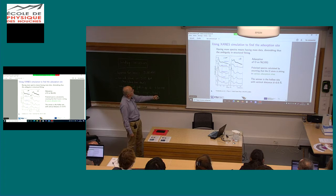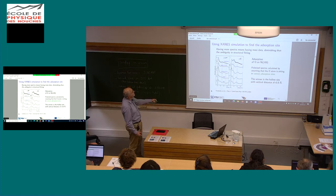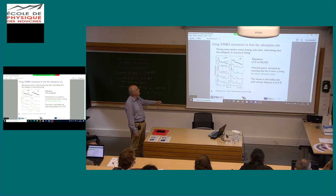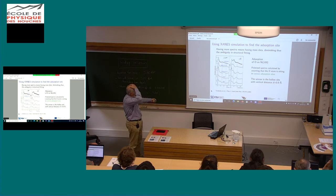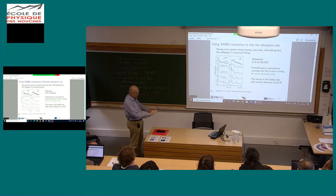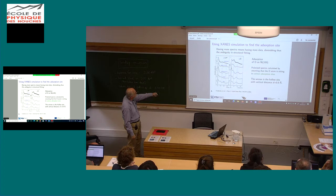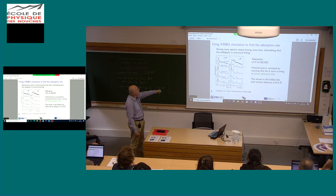As an instructive example: consider a nickel surface with oxygen adsorbing on it, and you want to know where the oxygen is sitting — atop, bridge, or hollow — and at what distance above the surface. You calculate the spectra for various structural models, compare with angle-dependent polarized spectra, and find the best agreement. In this case, the winner is the hollow adsorption site with a vertical distance of 0.9 ångströms.